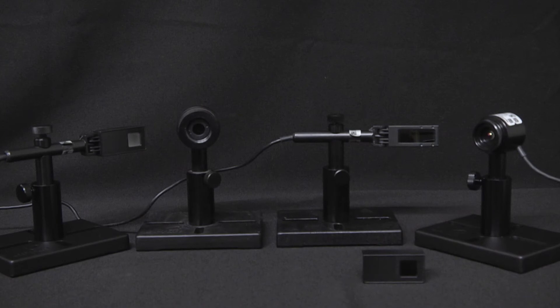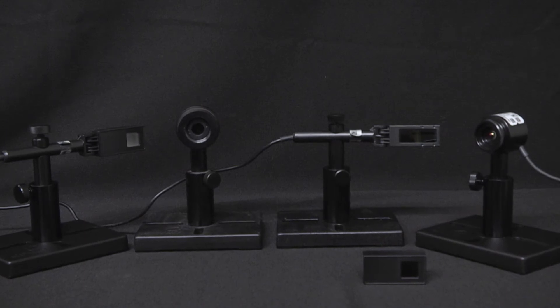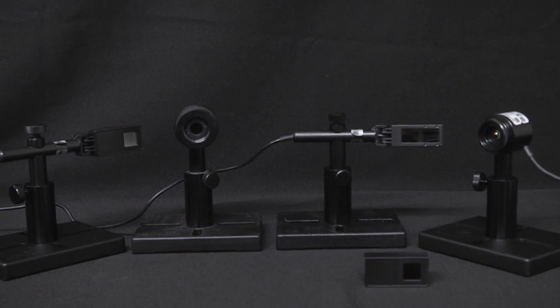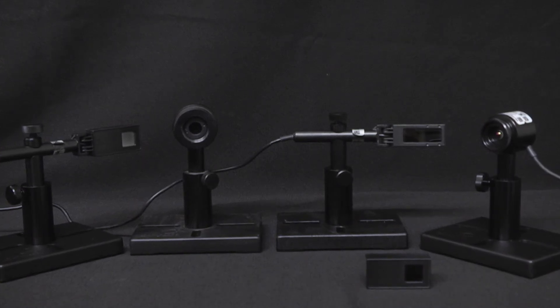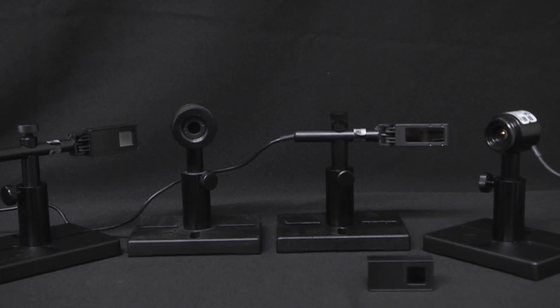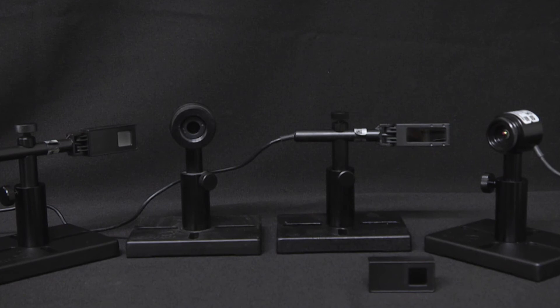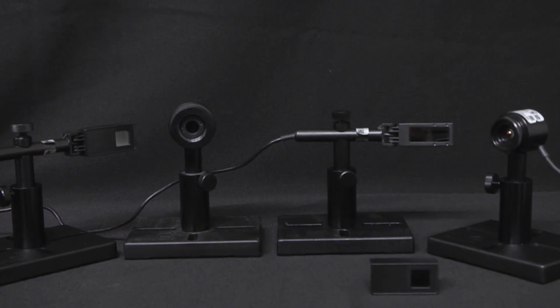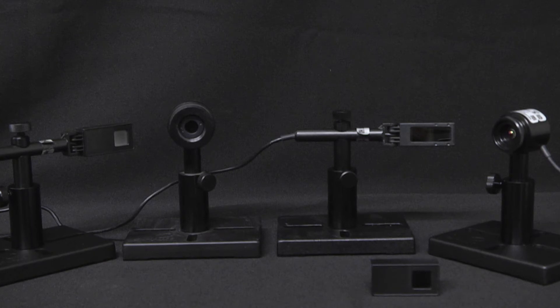For very low powers, from picowatts up to several hundred milliwatts, we normally use photodiode sensors. These are based on semiconductor detector elements, where light is converted directly to electrical current, which is then measured. Ophir offers several types for different spectral regions and different power levels.